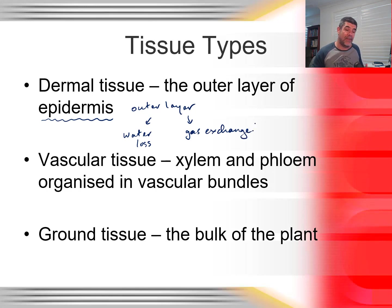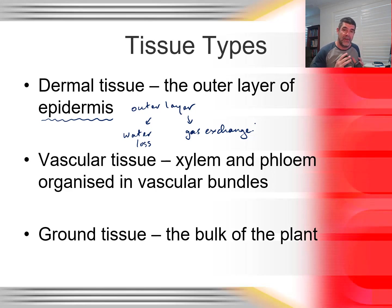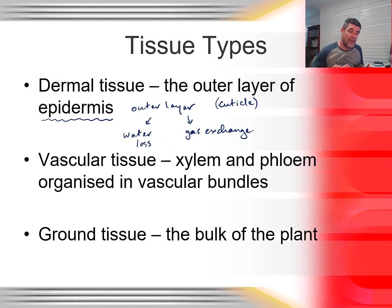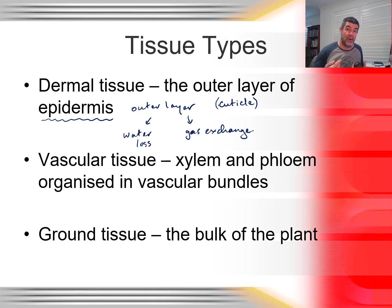When we look at the epidermal layer, we find things like guard cells around a stoma, which is a place where gas exchange can occur. The dermal tissue is the outside layer of each of our plant organs — stems, roots, and leaves. Epidermal cells can also excrete material to create a cuticle, a protective layer on the upper or lower surface of leaves to reduce water loss. We want to control and regulate water loss rather than eliminate it entirely, as water movement through the plant drives the transpiration pull through vascular tissue.